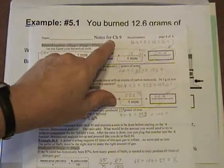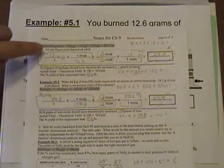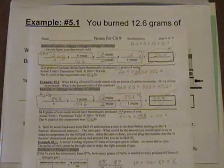Okay, this is question 5.1, which is located on the fourth page of your stoichiometry chapter 9 notes, located right here. Part of the question is on the previous page. It says you burned a certain amount of methane and you formed that much water. What was your percent yield?